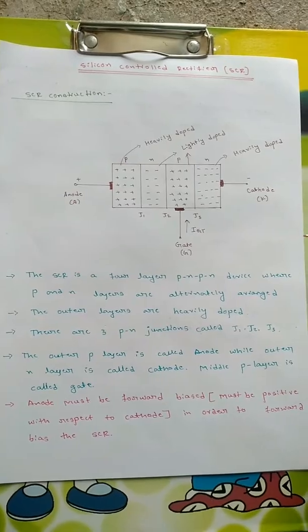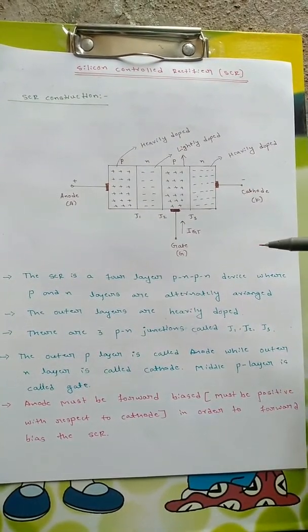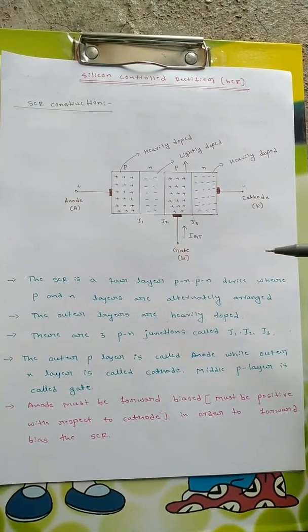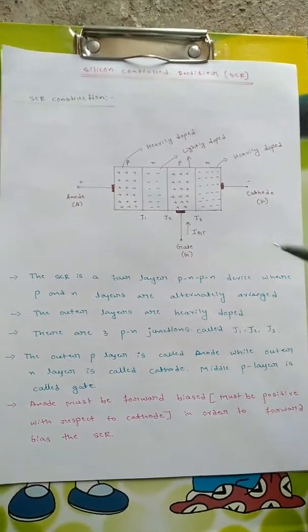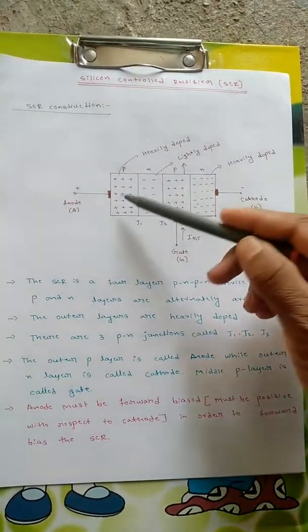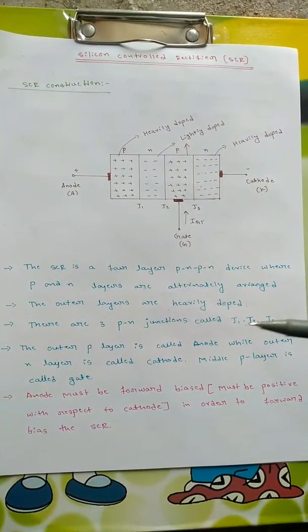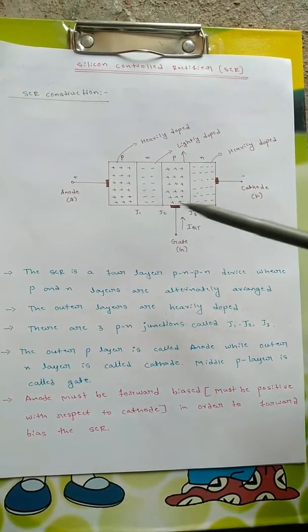Now coming to some points: The SCR is a four layer P-N-P-N device where P and N layers are alternately arranged. The outer layers are heavily doped. There are three P-N junctions called J1, J2, J3.